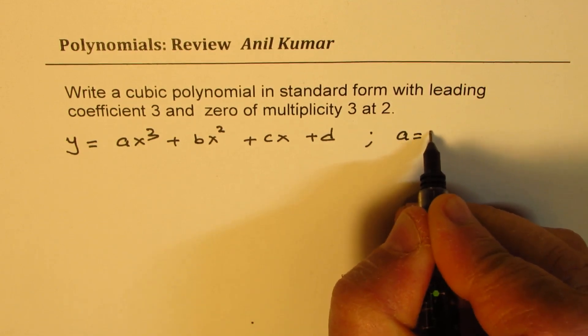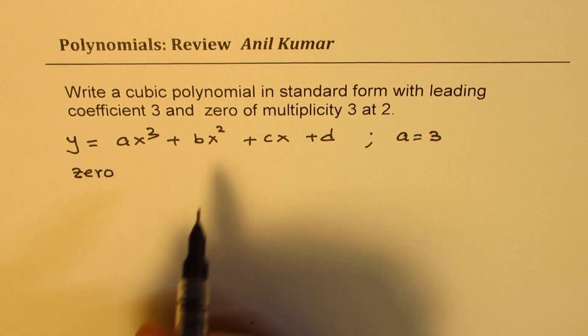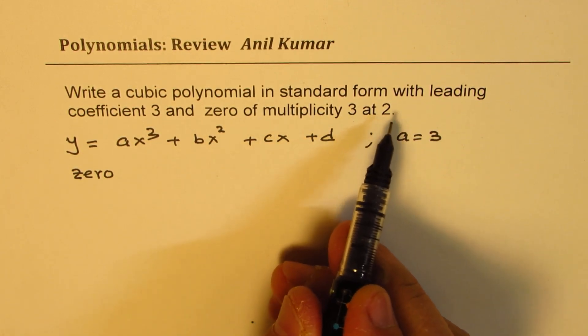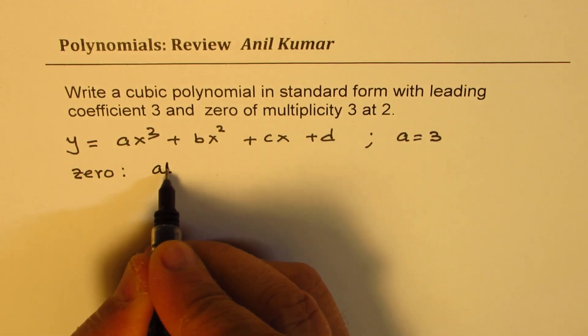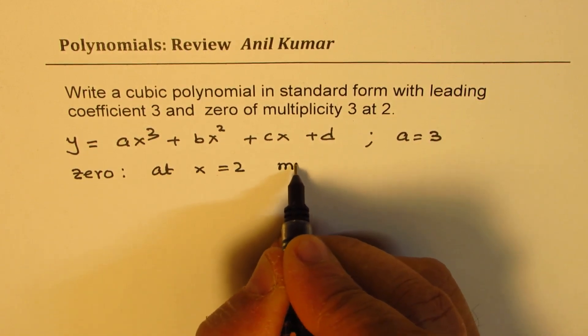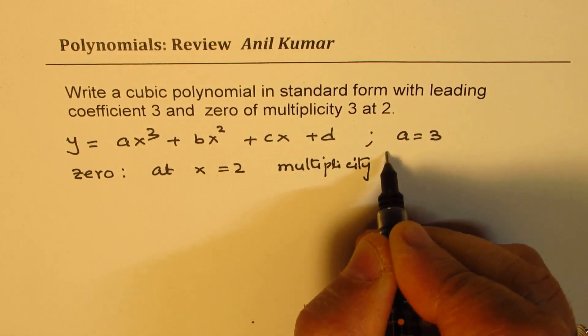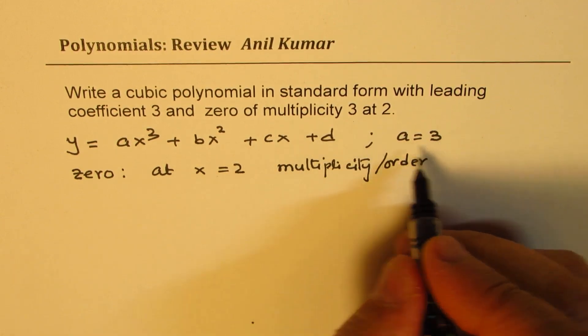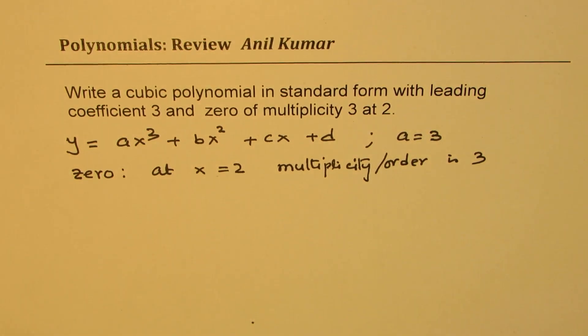We are also given a zero of multiplicity 3 at 2. This zero has multiplicity 3, so it is at x = 2 and multiplicity or order—we also say order—so it's a cubic zero, order is 3.